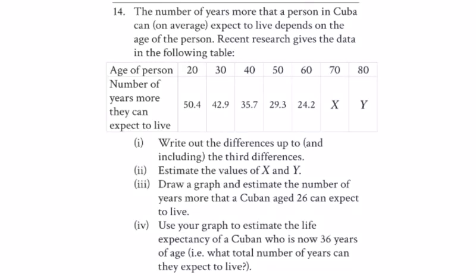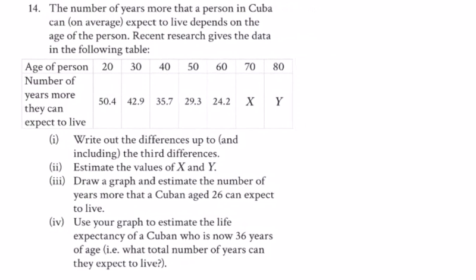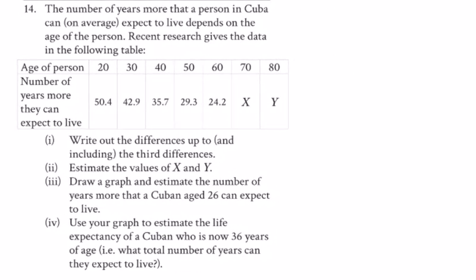Here we have question 14. There is an error in question 13, maybe go and have a look for it. So I'm going to look at the differences here. It's first, second, third, all the way. So the first difference here between 50.4 and 42.9 is down 7.5, minus 7.5.